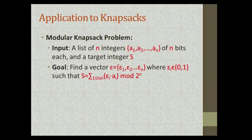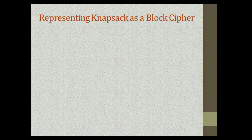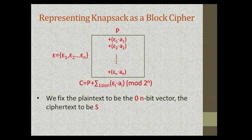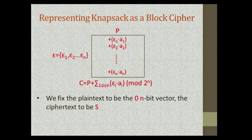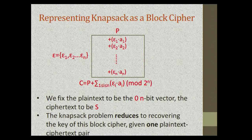We define the vector epsilon as an indicator for the subset — an n-bit Boolean vector. To apply our techniques to knapsack, the first step is to represent it as a block cipher. Given an arbitrary n-bit plaintext P and subset epsilon functioning as the key, we encrypt P by simply adding to it the corresponding generators indicated by the subset, obtaining ciphertext C. By fixing the plaintext to zero and the ciphertext to S, the knapsack problem reduces to recovering the key of the block cipher given one plaintext-ciphertext pair.